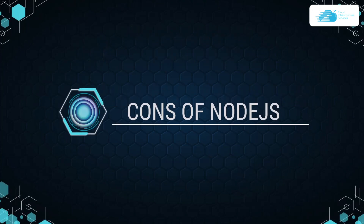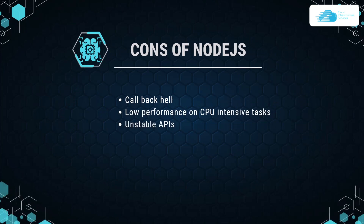Now let's talk about some of the cons of Node.js. First and foremost is callback hell. Node.js relies significantly on callbacks because of its asynchronous nature, and as a result, that so-called callback can negatively affect code quality. We also have low performance on CPU-intensive tasks. Additionally, there are the unstable APIs — there are numerous tools in the npm registry that are either of poor quality or not fully documented, causing many users to create unstable APIs using those packages.